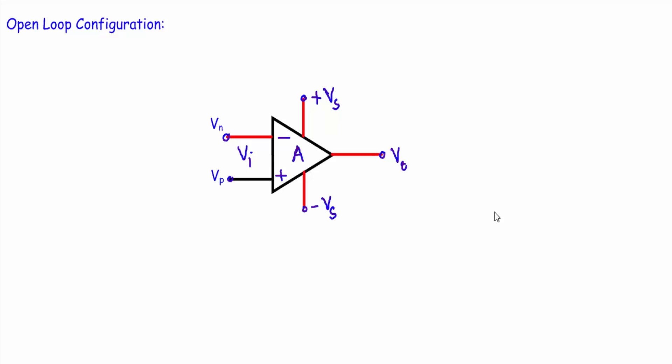In my previous videos I have shown you the linear applications of the operational amplifier — that means when the operational amplifier is in negative feedback. We covered the integrator circuit, differentiator circuit, summing amplifier, difference amplifier, subtractor circuit, inverting amplifier, and non-inverting amplifier. Now I will show you some nonlinear applications of the operational amplifier.